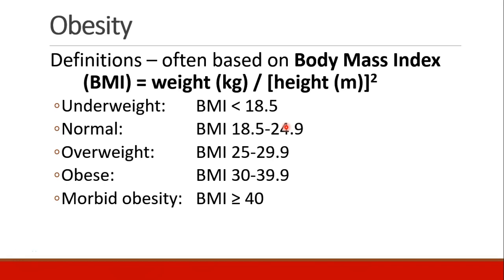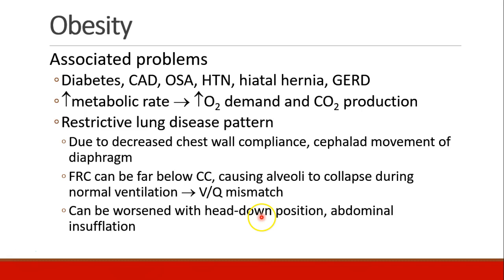Now we're going to talk about obesity. Most definitions use the body mass index, calculated based on weight and height. Normal BMI is 18.5 to 25. Below 18.5 is underweight; 25 to 30 is overweight; 30 to 40 is obese; and greater than 40 is morbidly obese. Patients with obesity are at increased risk for diabetes, coronary disease, sleep apnea, hypertension, hiatal hernia, and GERD.